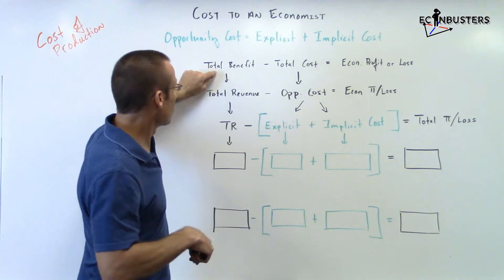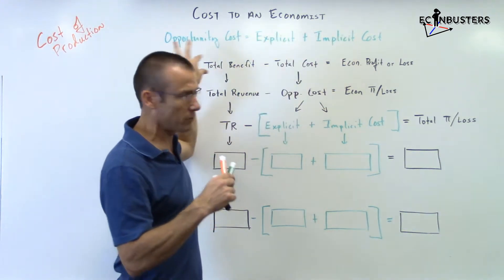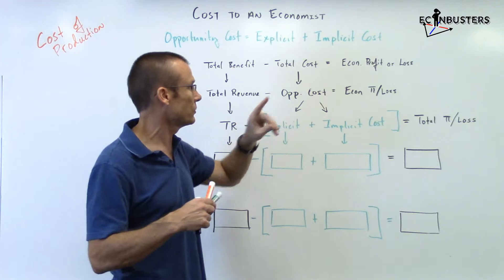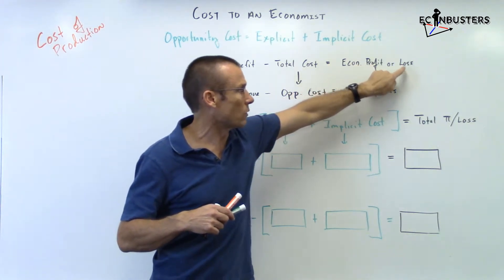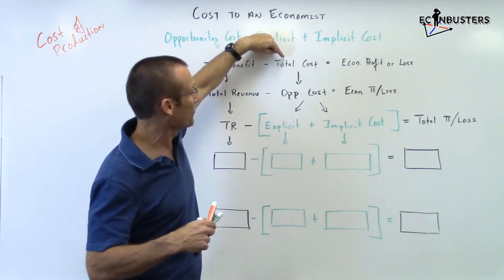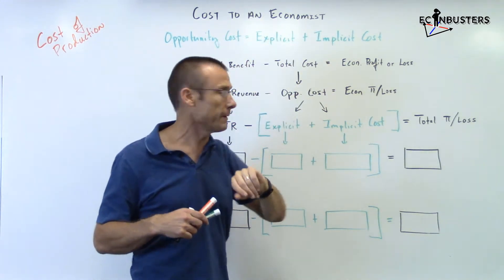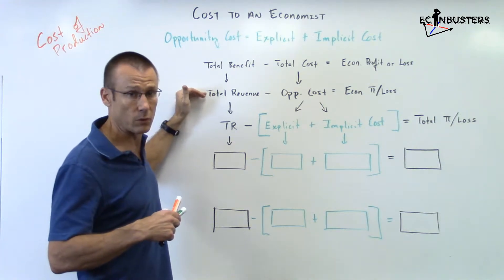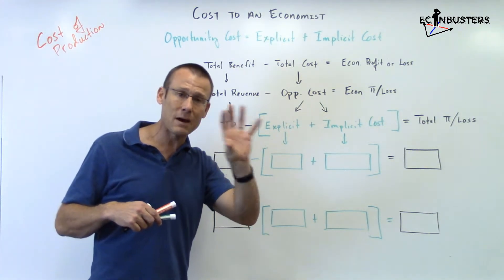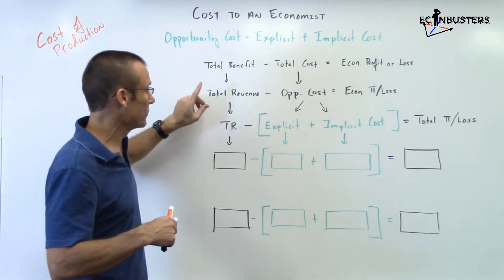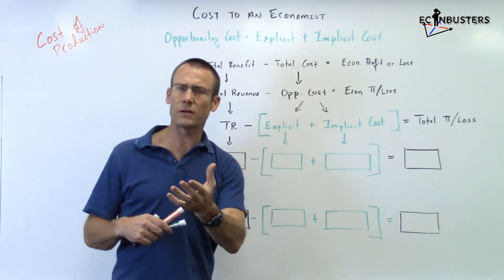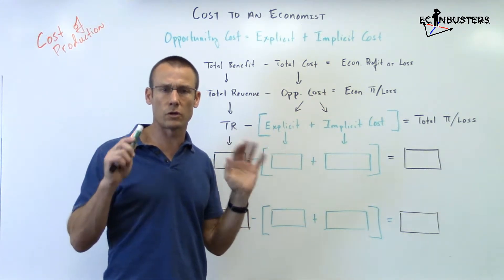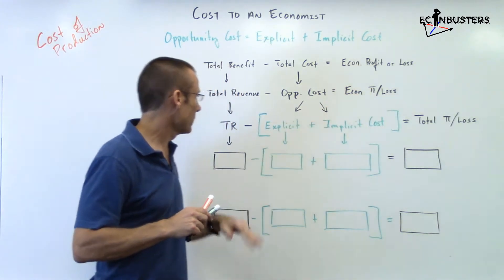Here on the whiteboard: Total Benefit minus Total Cost equals Economic Profit or Loss. I say 'economic profit or loss' instead of just 'profit and loss' because I'm talking about total cost — both types of costs. When doing Theory of the Firm, total benefit is total revenue, since these are profit-maximizing firms. Total cost is opportunity cost — they're one and the same — and this equals economic profit or loss.